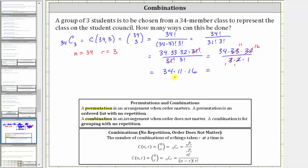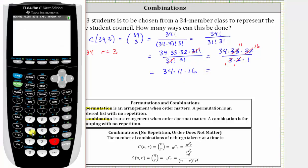Let's evaluate this on the calculator. We have 34 times 11 times 16, which is 5,984. Let's also evaluate the original combination. To do this, we first enter n, which is 34.